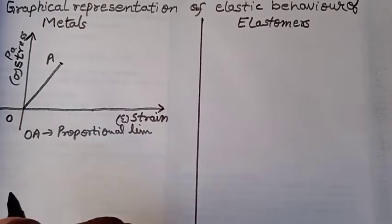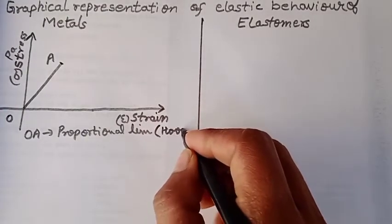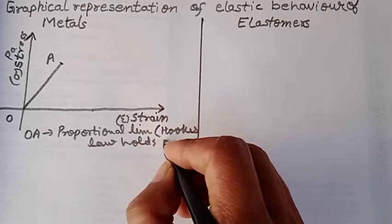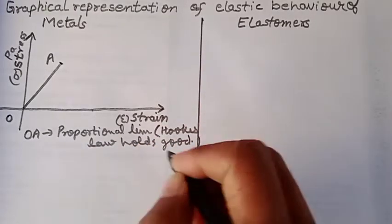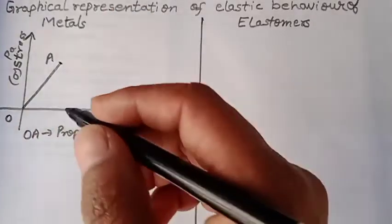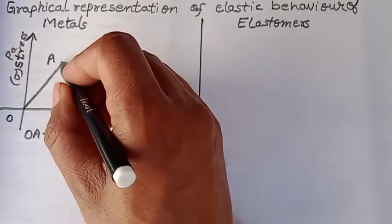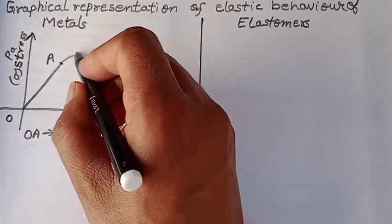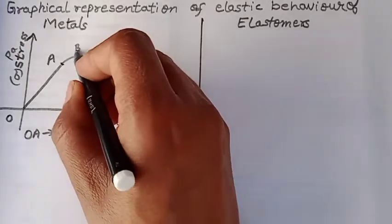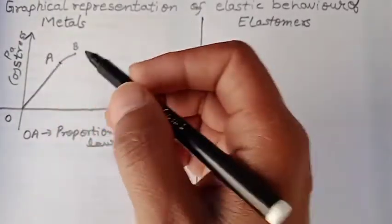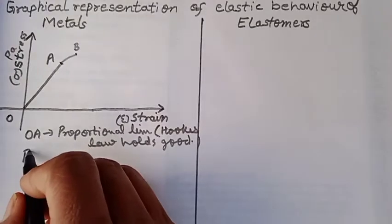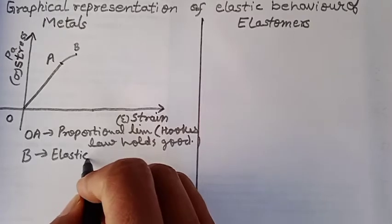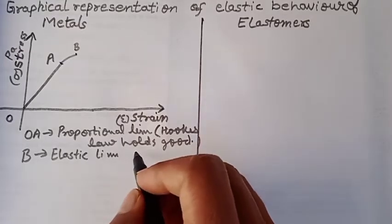Here Hooke's law holds good. Stress is directly proportional to strain. Now if we slightly increase stress, we will have a point B. B is called elastic limit or yield point.